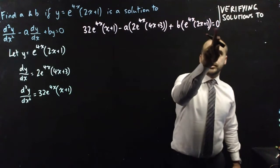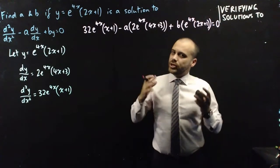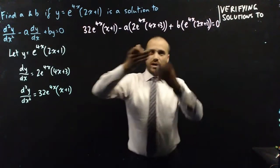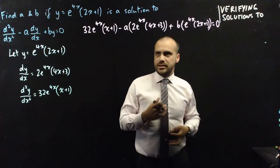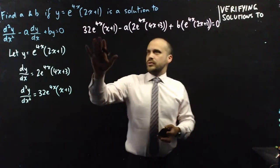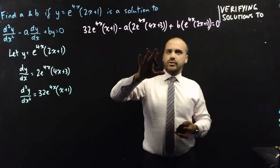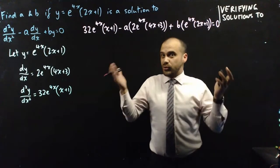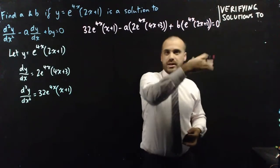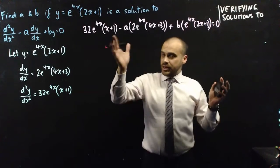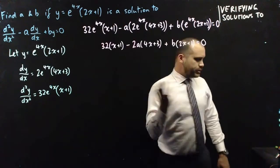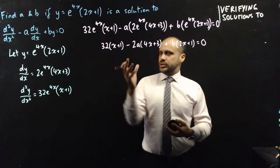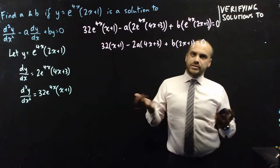It feels like a big problem because we don't know what a or b is, and we only have one equation — it feels like we need simultaneous equations. Let's simplify. Everything has a common factor of e to the 4x, so we can factor that out and divide both sides by e to the 4x. Zero divided by e to the 4x is still zero, so that e to the 4x disappears from both sides. It still feels like a problem — one equation, an a value and a b value to figure out.